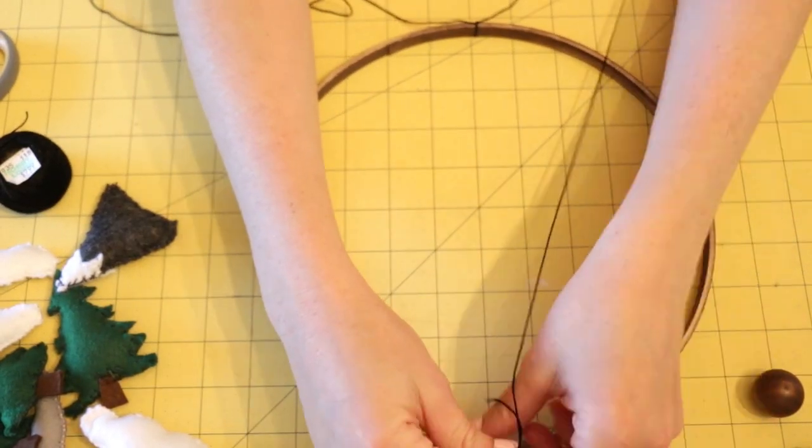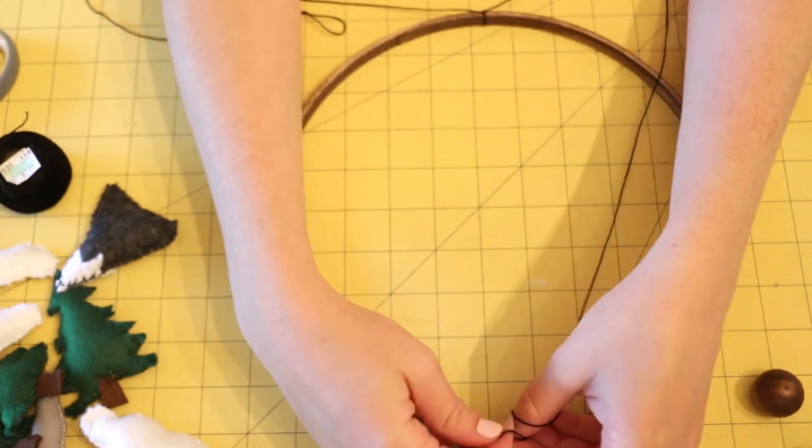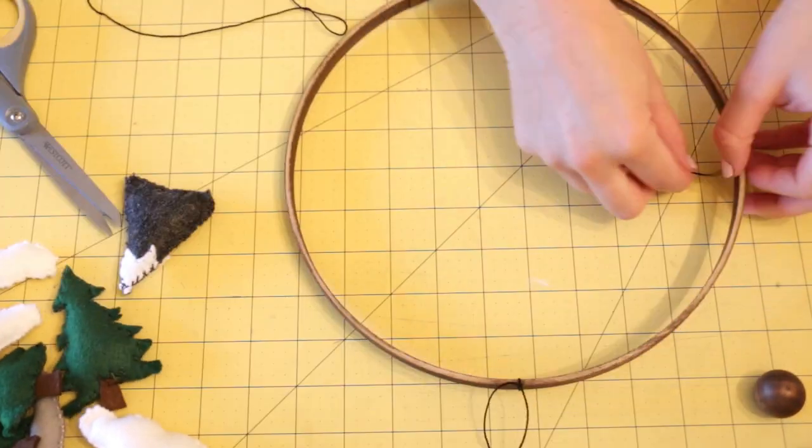I cut another six black strings about 18 inches long and started to tie them evenly around the embroidery hoop.